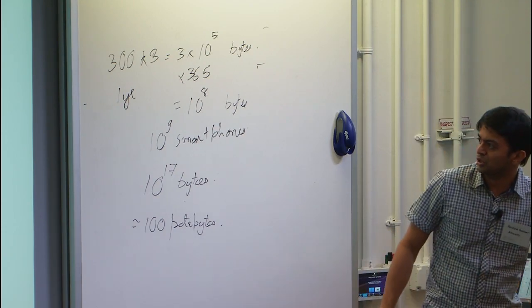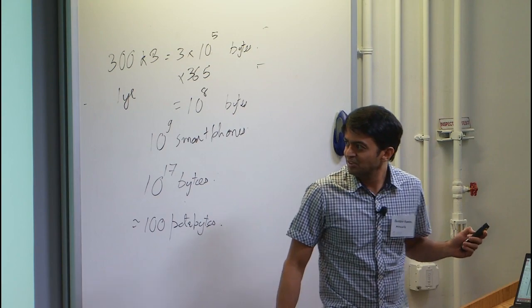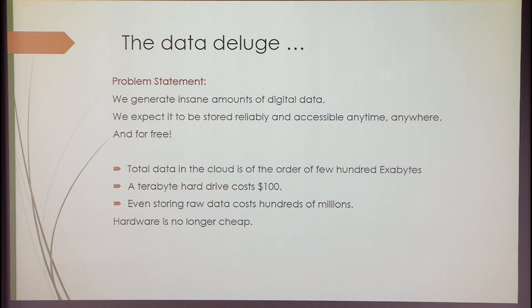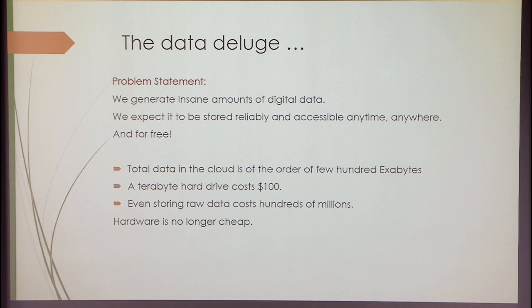How much does it cost to actually store this amount of information? We've heard truisms like 'storage is cheap.' The total data stored in the cloud is on the order of exabytes — 10^18, maybe a few tens or hundreds of exabytes. A terabyte hard drive on Amazon costs about $100, so it is cheap, but not compared to the scale of data you actually need to store. Just storing the raw data on commodity hard drives is going to cost you hundreds of millions of dollars. Hardware is cheap in the sense that X amount of storage costs less now than before, but the amount of data we have to store is completely insane.